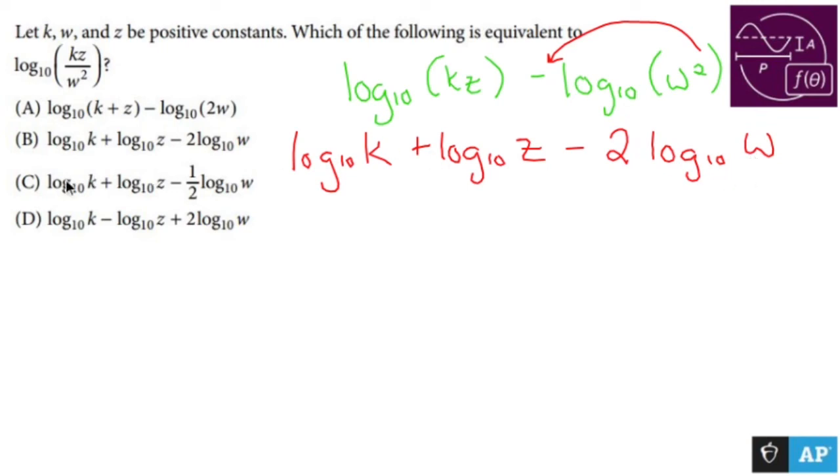Everything's ripped out the way it should be. Log base 10 of k plus log base 10 of z minus—wrong one. So it's not this one. Log base 10 of k minus log base 10 of z plus two log base 10 of w. The answer is D for this one.